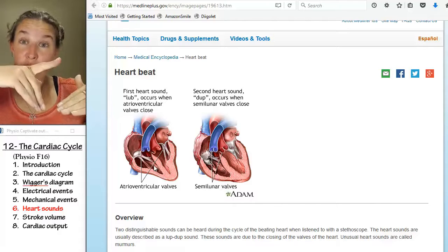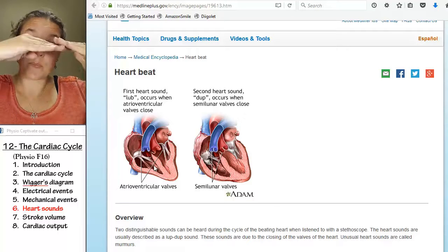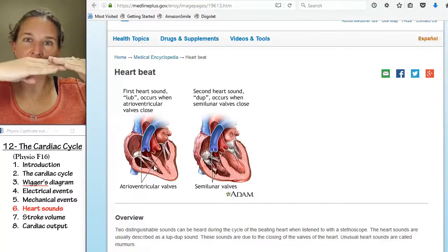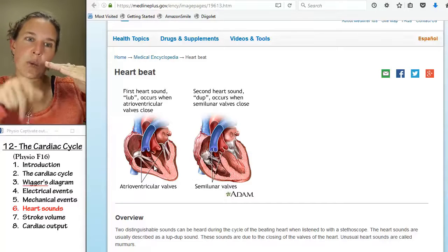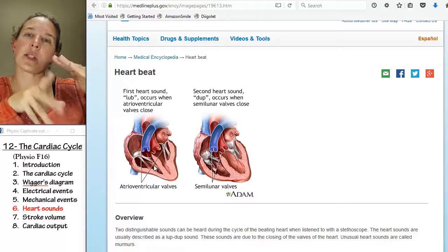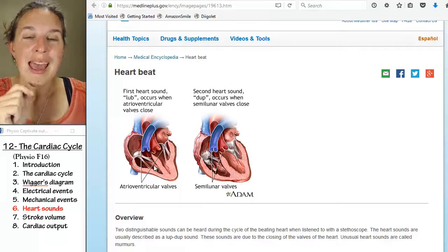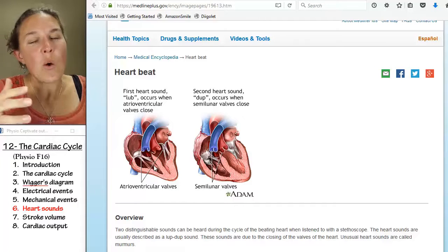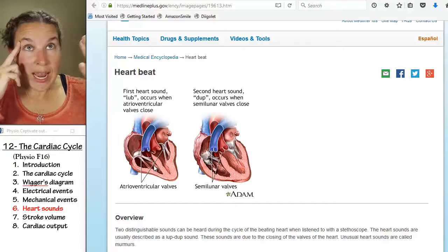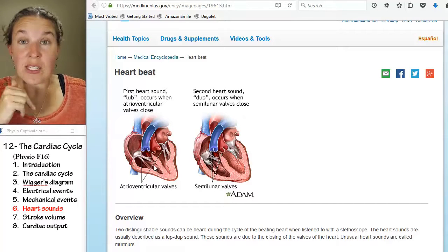Because a little bit is going to get through backwards, but then it's going to snap off. So what was going to try to get through there, there's going to be some turbulence that you can hear with the first heart sound, which is lub. And then systole is associated with the lub.